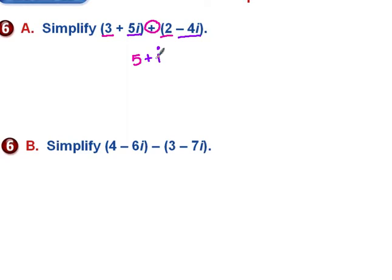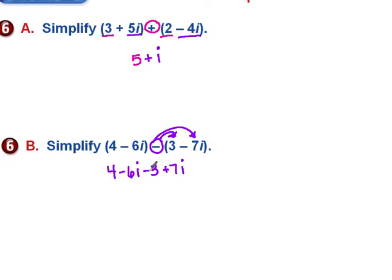For subtraction, I need to be careful because I want to subtract everything in the grouping, which may change some signs. That gives me 4 minus 6i, and distributing the negative gives negative 3 plus 7i. Collecting like terms: 4 minus 3 is positive 1, and negative 6i plus 7i is positive i. So the new complex number is 1 plus i.